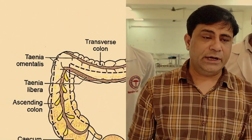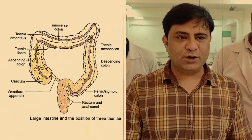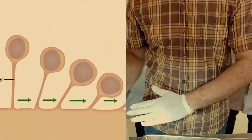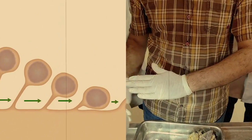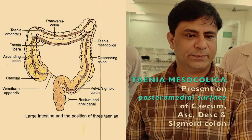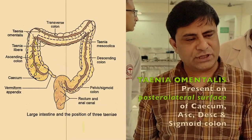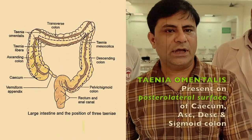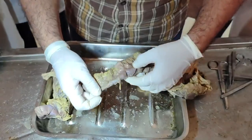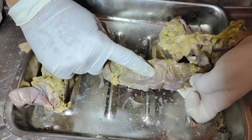For the cecum, ascending, descending, and sigmoid colon, the tinea connected to the mesentery is called Tinea Mesocolica. One tinea on the front is Tinea Libera, and the tinea on the opposite side where the paracolic gutters are is called Tinea Omentalis.